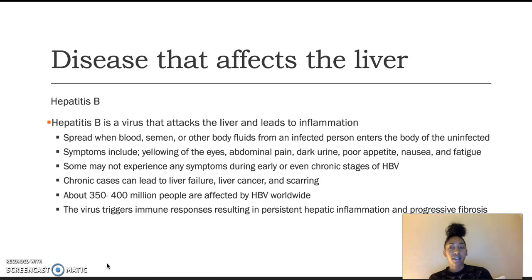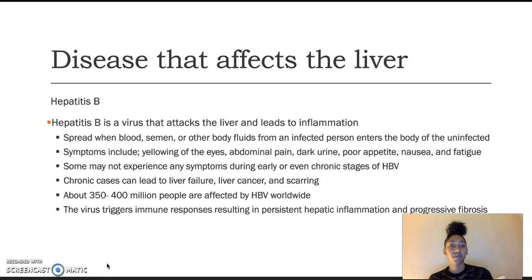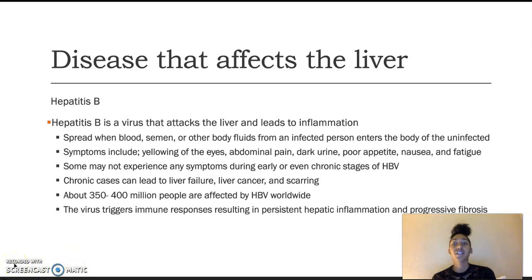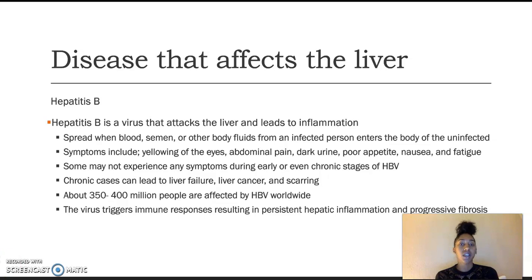Not all who contract hepatitis B have symptoms. Some won't experience symptoms until the chronic stages, and some don't develop any at all. Chronic cases can lead to liver failure, liver cancer, or scarring of the liver. About 350 to 400 million people are affected by hepatitis B virus worldwide. The virus triggers immune responses resulting in persistent hepatic inflammation and progressive fibrosis.